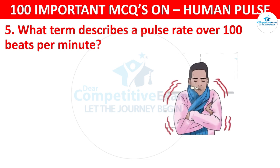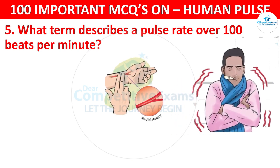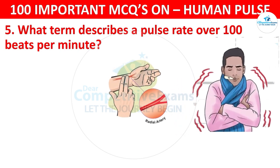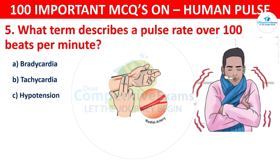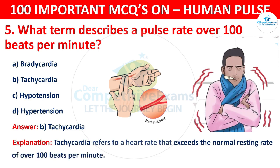Question number 5: What term describes a pulse rate over 100 beats per minute? Your options are: Bradycardia, Tachycardia, Hypotension, or Hypertension. The correct answer is Tachycardia. Tachycardia refers to a heart rate that exceeds the normal resting rate of over 100 beats per minute.